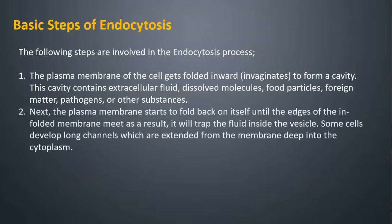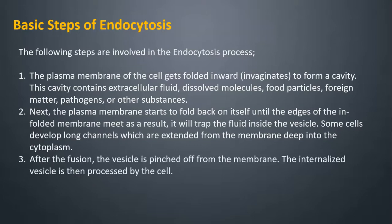Next, the plasma membrane starts to fold back on itself until the edges of the enfolded membrane meet; as a result, it will trap the fluid inside the vesicle. Some cells develop long channels which are extended from the membrane deep into the cytoplasm. After the fusion, the vesicle is pinched off from the membrane. The internalized vesicle is then processed by the cell.